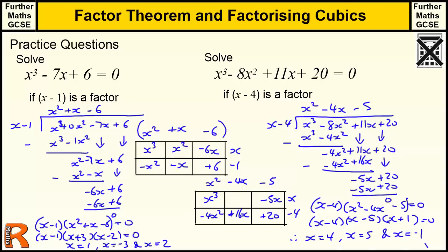Hopefully that's helped you to be able to solve these sorts of equations. I don't like to leave anything undone, so just to confirm that combining those terms gives us the minus 8x². So that's factor theorem and factorising cubics, where you know one factor, and then solving the equation.